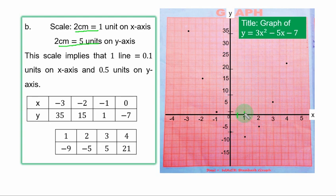On the y axis, if you combine 2 boxes, you give it 5 units. The next one is 10, 15, 20 and so on. If you move down from the origin, you have minus 5, minus 10, minus 15. This scale implies that 1 line is equal to 0.1 units on s axis and 0.5 units on y axis. To get 1 line, you simply divide the number of units by number of lines.